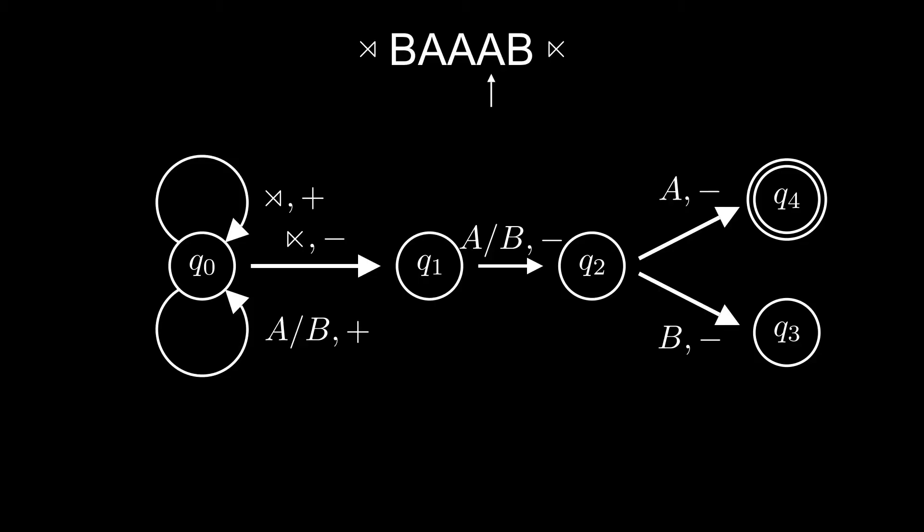Now this automaton actually has one more state than the smallest equivalent one-way deterministic automaton, but if we want to go further back, third, fourth, fifth letter from the end, then for each additional letter, we add one more counting state after q1. Going back further in a one-way automaton requires an exponentially larger number of states. So even though they're equivalent in computational power, two-way automata can make things a lot simpler.